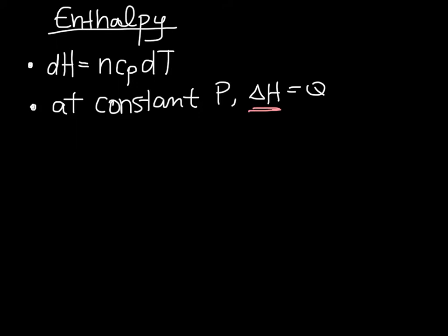To find delta H, we simply integrate the right-hand side of the equation from T1 to T2. Let's take a look at how enthalpy normally varies with temperature.